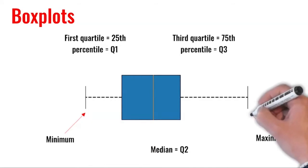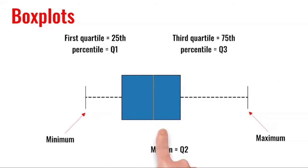The maximum and minimum are defined based on the interquartile range, called IQR.